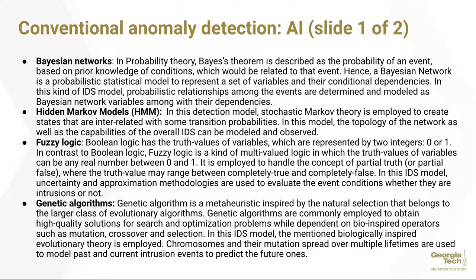Finally, conventional anomaly detection using AI. There are actually eight different sub-techniques. Using Bayesian networks, a form of probability theory, Bayesian theorem is described as the probability of an event based on prior knowledge of conditions related to that event.